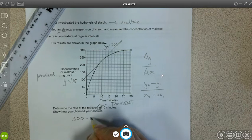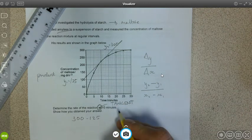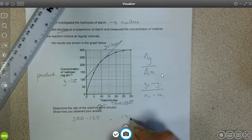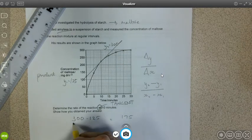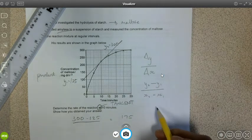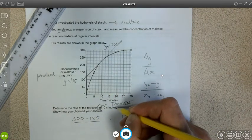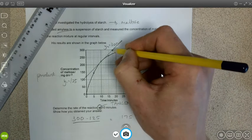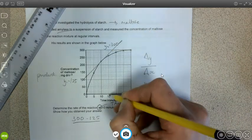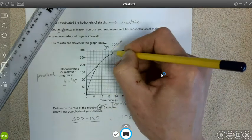For determining the change in y, or the difference in y, is 300 minus 125 or 175, divided by the change in the x. So the final time here, if we have a look at the final time we can read off the scale there, so 15, perhaps 17.5.